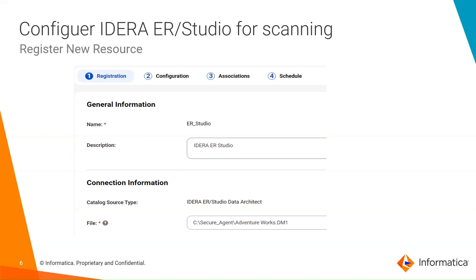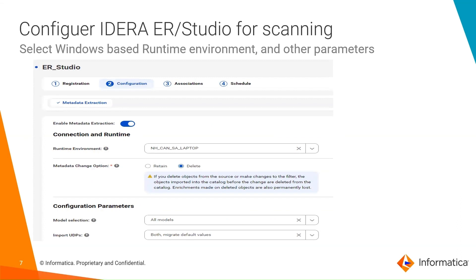At the registration page for a new resource, please provide a name, description, and the file location. I am using just ER Studio as a name for example. However, the name ideally should be more meaningful based on the business subject area. Please provide a meaningful description and the location of the DM1 file where the Windows-based agent can read it. This location could be a local or shared drive. Click Next to go to the next page for configuration.